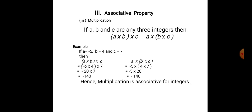Now, let us move on to associative property under multiplication. If a, b and c are any three integers, then a into (b into c) is equal to (a into b) into c. Example: if a is equal to minus 5, b is equal to 4 and c is equal to 7, then a into (b into c) is equal to minus 5 into (4 into 7). Always solve the brackets first. Minus 5 into 4 is minus 20. Minus 20 into 7 is minus 140.